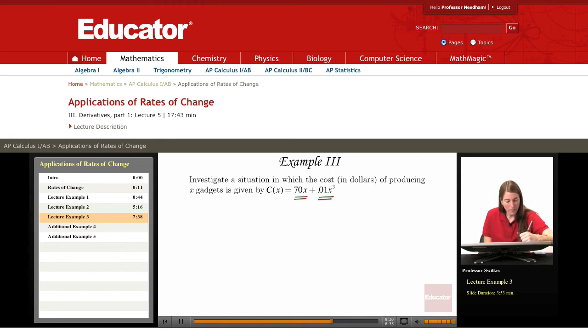And so I'd like to look at the derivative of this cost function. Derivative of 70x is 70. Derivative of 0.01x cubed is 0.03x squared. So I got 0.01 times 3x squared.